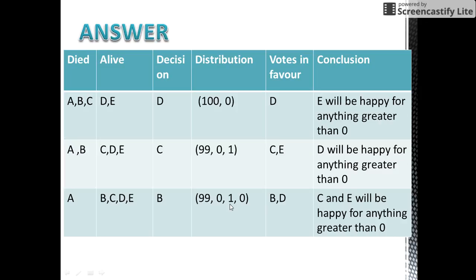Now in this case, C and E get 0 coins each, so they would be in favor of the proposal if it were proposed by A. So let us see the final solution of this puzzle.